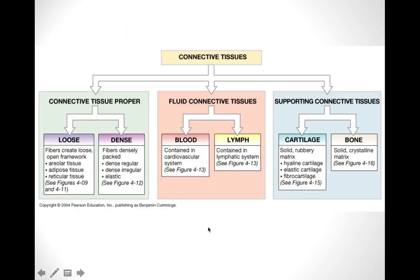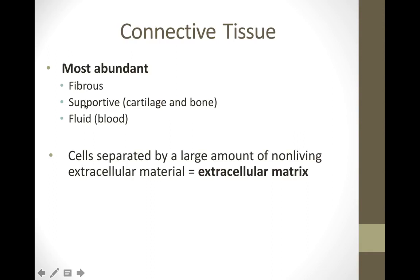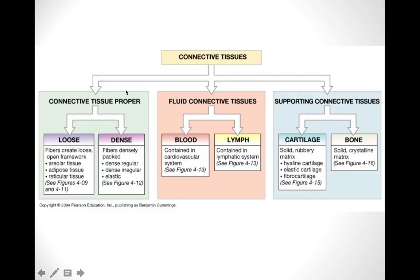Looking at the three main groups: connective tissue proper — also called fibrous — is broken down into loose and dense. Fluid connective tissue is broken down into blood and lymph. Supportive connective tissue is broken down into cartilage and bone. Let's go ahead and discuss each of these main categories and their subclassifications.